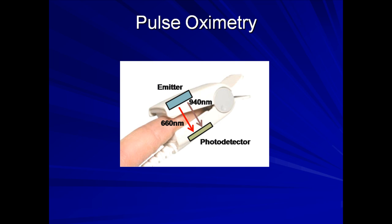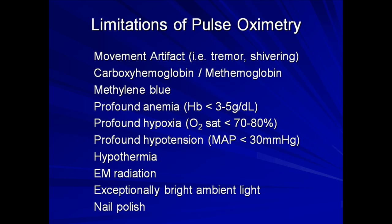The photo detectors only register transmitted light of alternating intensity — otherwise the pulse oximeter would erroneously report values based on light transmission through veins and extravascular tissue. Pulse oximetry has a long list of potential limitations, though most are rare causes of false readings. They include movement artifact, dyshemoglobinemias, methylene blue, profound anemia, profound hypoxia, profound hypotension, hypothermia, ambient electromagnetic radiation, exceptionally bright ambient light such as in an operating room, and certain shades of nail polish.